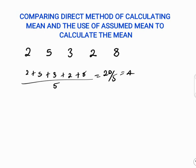Now let's use the assumed mean to calculate the mean of this distribution again. In using the assumed mean, any number at all can be used. You can use a number that is part of the scores in the distribution — like 2, 5, 3, 2, 8 — or you can even choose an external score such as 9, 10, or 20. Choose a number you can work with effectively.